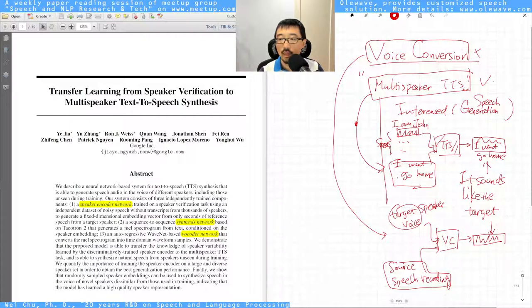And a text input, for example, I want to go home. And they're supposed to generate an audio recording which is I want to go home, but in John's voice.